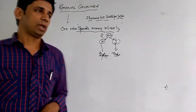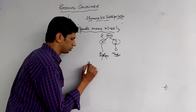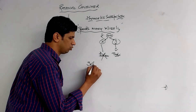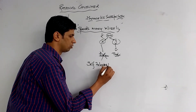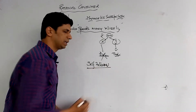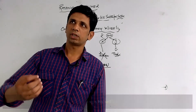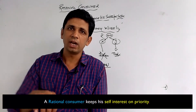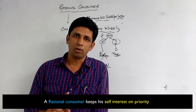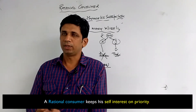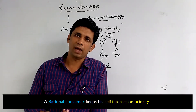We can say that a rational consumer is one who works for their self-interest. The other person's interest is secondary. When you spend money, naturally you will keep your own interest as the priority.